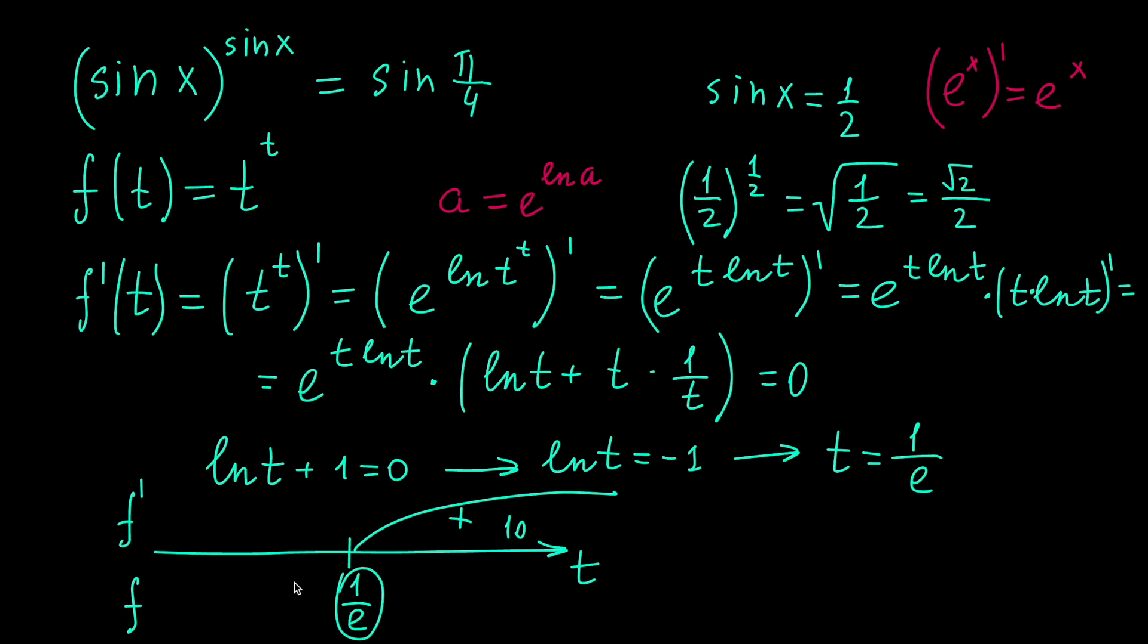And if we try something less than 1 over e, let's say 1 over e squared, or e to the power of minus 2, then we will have natural logarithm of e to the minus 2. It is equal to minus 2 plus 1, equal to minus 1. So this factor is negative, but the exponential function is always positive. So the whole product is negative. So we have a minus sign for this interval.